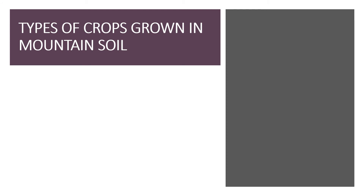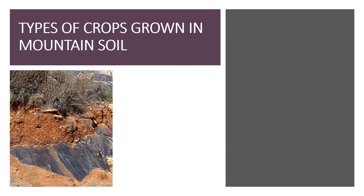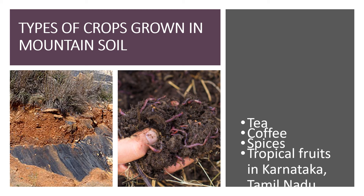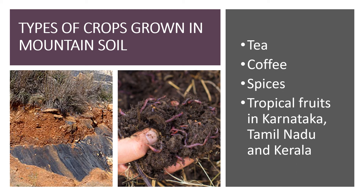Mountain soil is very rich in humus. Humus is the remains of dead plants and animals. The minerals present in the humus make the soil very fertile. Mountain soil is found in the Himalayan region and in the northeastern parts of India. This soil is very good for growing tea, coffee, spices and tropical fruits in Karnataka, Tamil Nadu and Kerala.